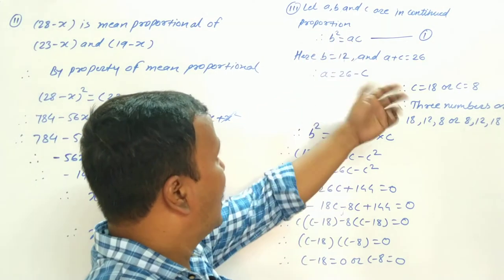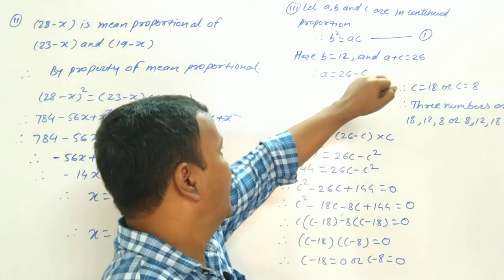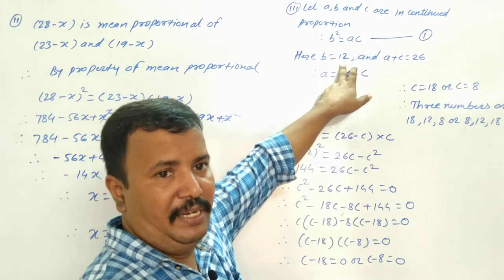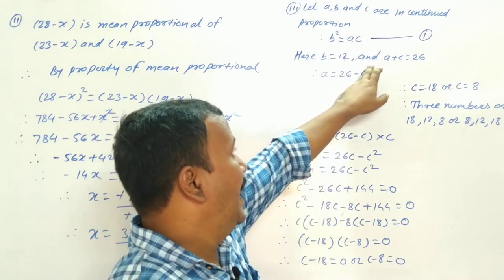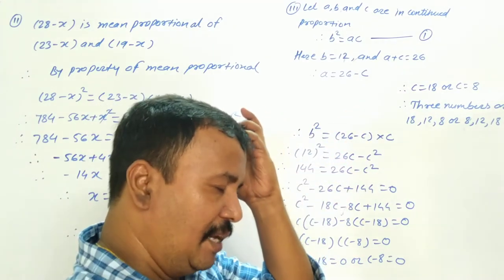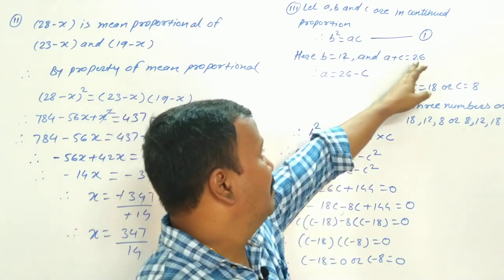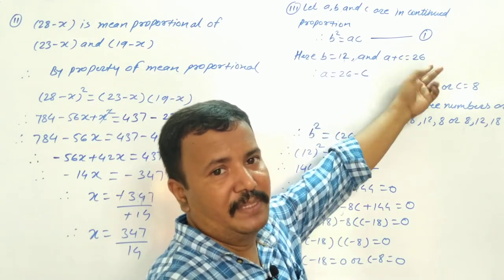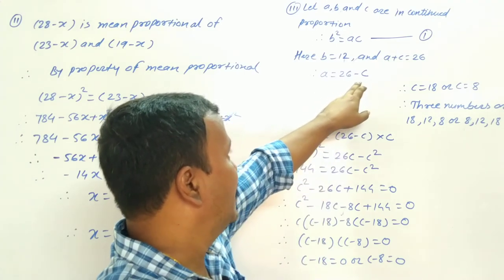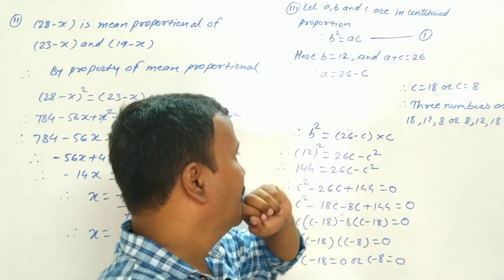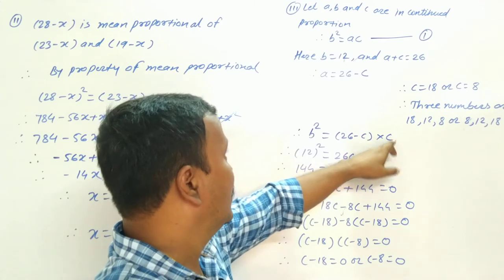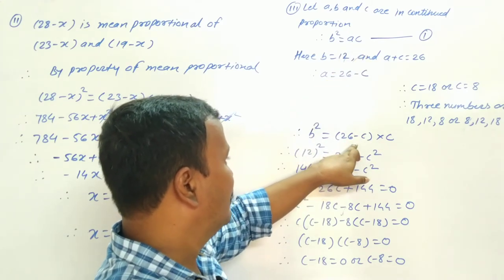Let A, B, and C be in continued proportion. So B squared equals A into C. Here B equals 12 because the mean proportion is given as 12, and A plus C equals 26. Let A equal 26 minus C.